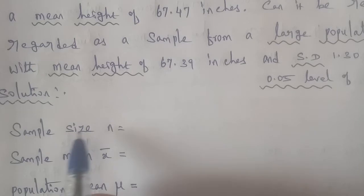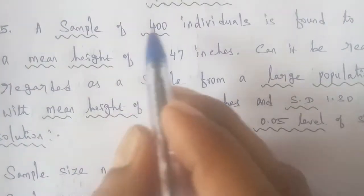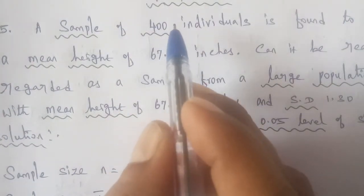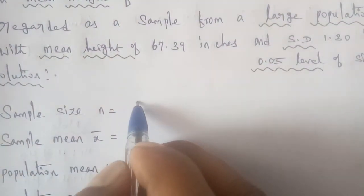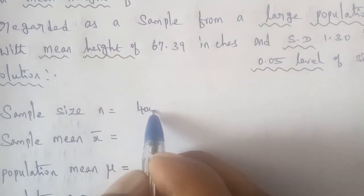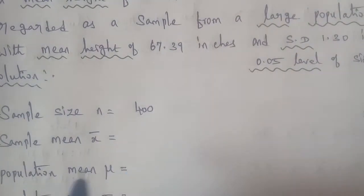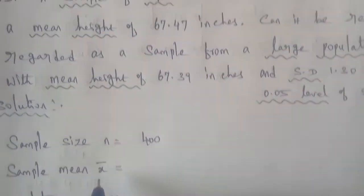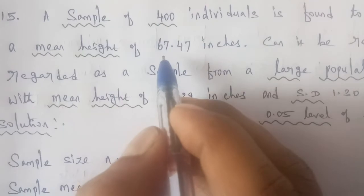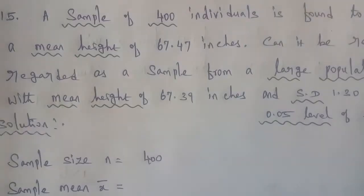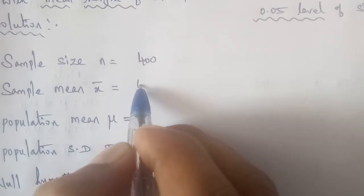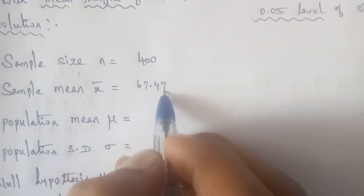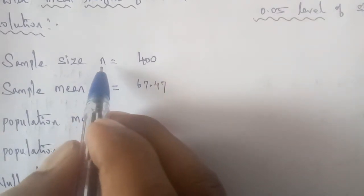The solution: the sample size is 400 individuals, so n equals 400. And the mean height, x bar, is 67.47 inches. So sample size n equals 400.